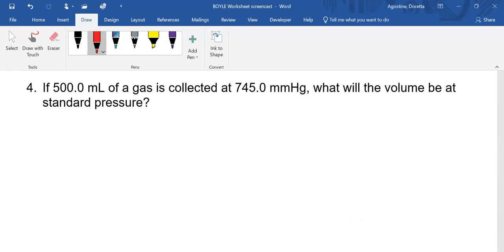So if 500 milliliters of a gas, so V1 is 500.0 liters, so that's four sig figs, is collected at 745 millimeters. So pressure is 745 millimeters. What will the volume be at standard pressure? So V2 is a question mark, and P2... Now, you have to think for a minute here. It's like, wait, what do you mean standard pressure?